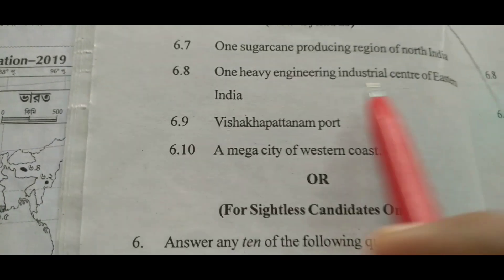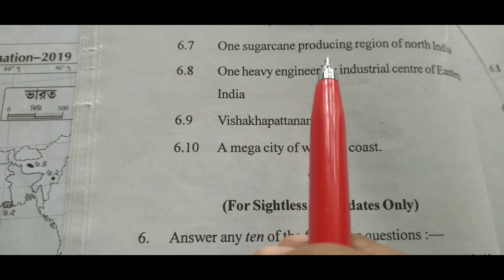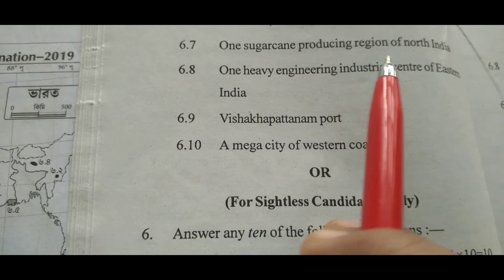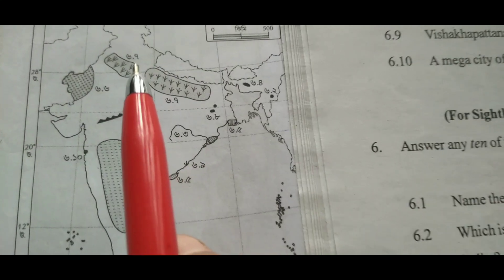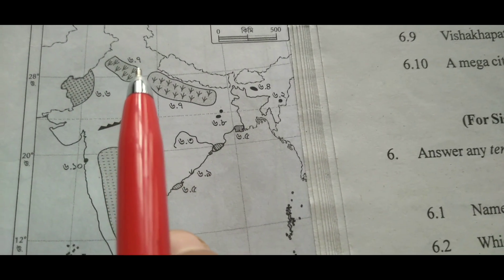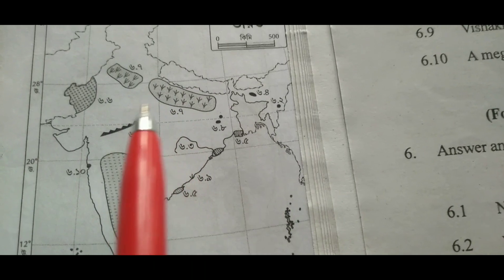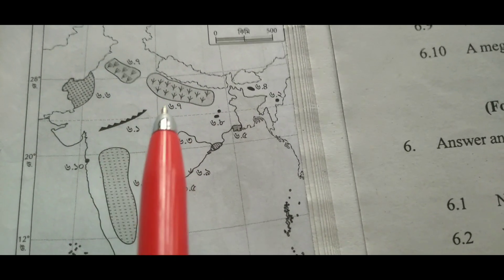6.7: One Sugarcane Producing Region of North India — the answer is Uttar Pradesh.